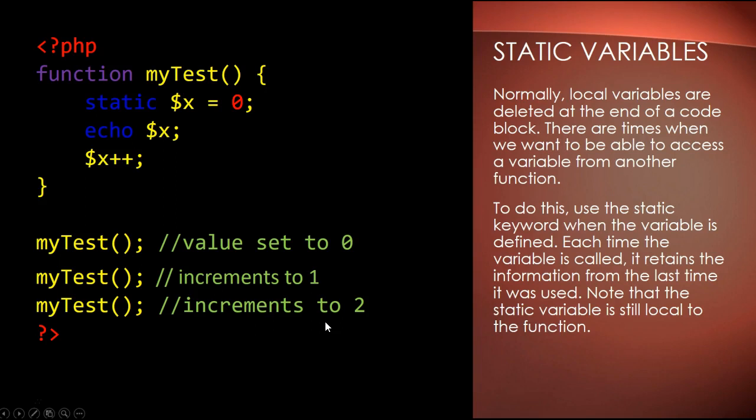Static variables. Normally a local variable is deleted when the function gets to the end of the block and then it doesn't exist anymore. But if you want to be able to access it after that function, you just use the static prefix when you declare the variable.